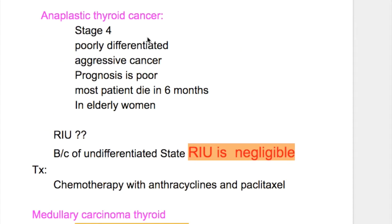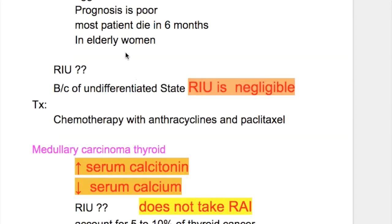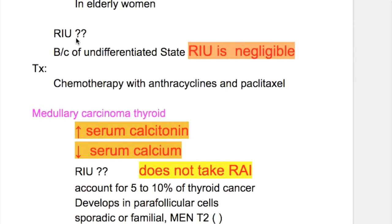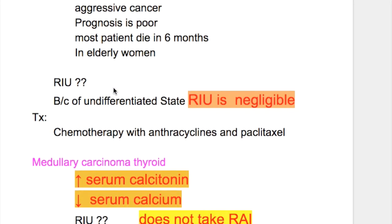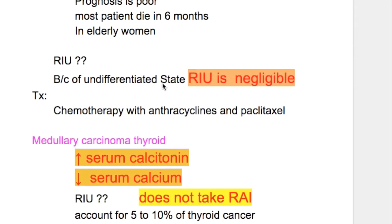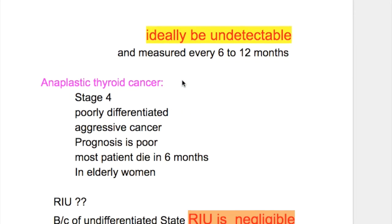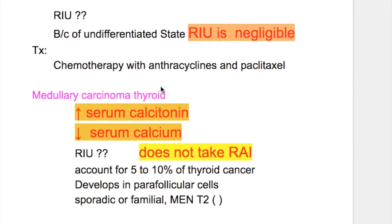Anaplastic cancers are stage 4, poorly differentiated, and aggressive. Prognosis is poor — most patients die within six months. It usually occurs in elderly women. Because of the undifferentiated state, radioiodine uptake is negligible in anaplastic cancer.